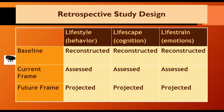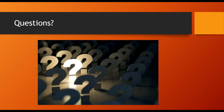Regarding study design, in a retrospective study you try to create a baseline by looking at before the point of turbulence — reconstructing what people's lifestyle, lifescape, and emotional life were like before the turbulence occurred — and then assessing the current frame and projecting into the future. It's the difference between the current frame and the baseline that shows the impact. If you're doing an anticipatory study, the baseline is simply the current frame, so it's much simpler.